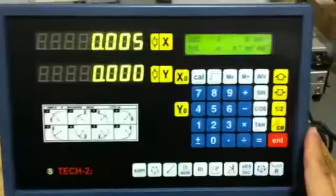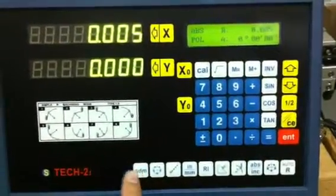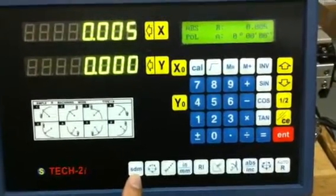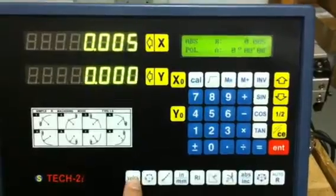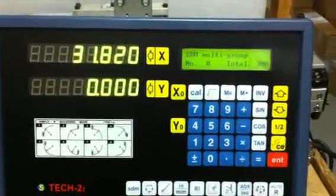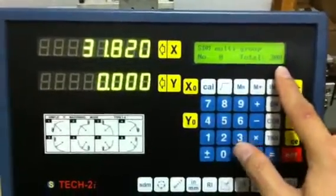Over here at the TDS2i, the SDM function is at this icon. When you want to select the SDM, just press on the SDM button and you have a total of 300 points that you can create.